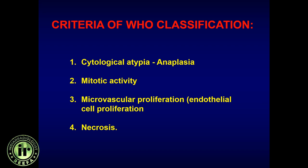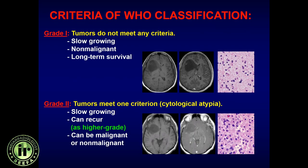What does the WHO use for the classification of brain tumors? They have four criteria: anaplasia, mitotic activity, endothelial cell proliferation, and necrosis. Based on which and how many criteria are present, they classify from grade 1 through grade 4. Grade 1 tumors have none of these criteria — they tend to be non-enhancing, slow-growing, with relatively better prognosis, non-malignant, and with long-term survival.